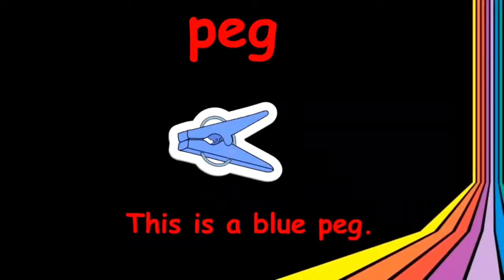You can see the word peg. Peg is something which helps to hold clothes on a string. I have used the word 'peg' in a sentence like: this is a blue peg.